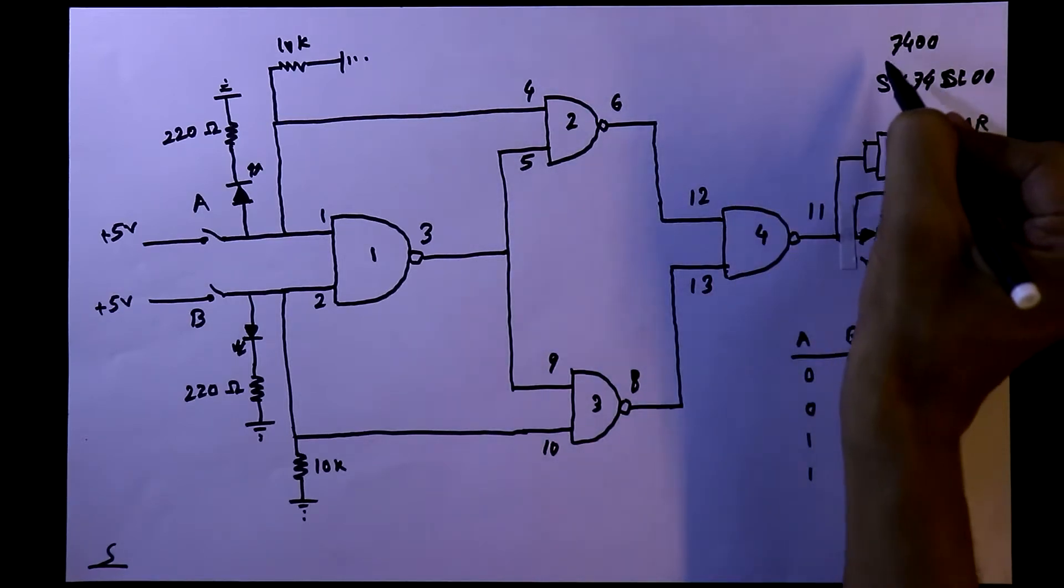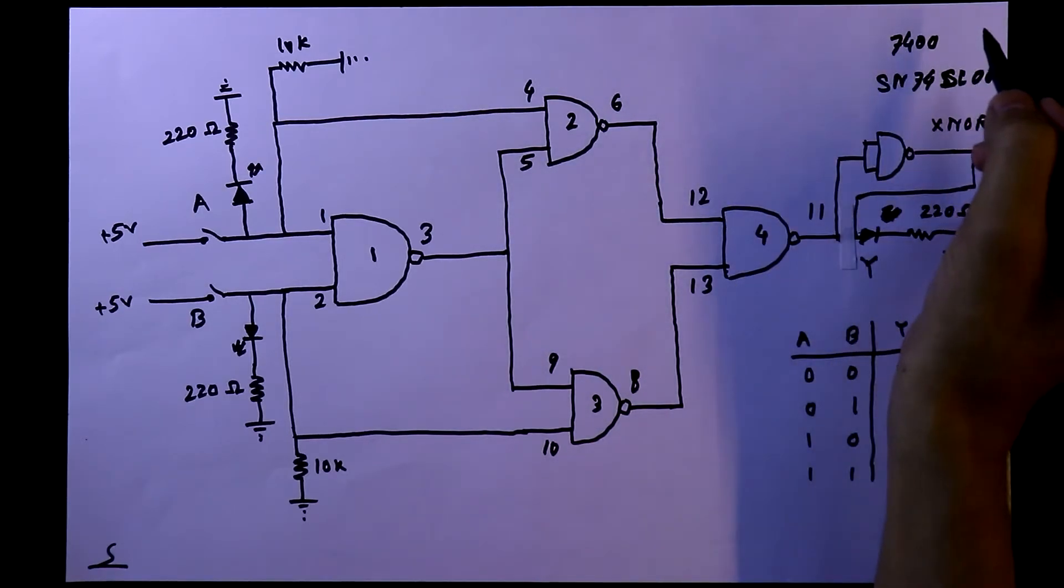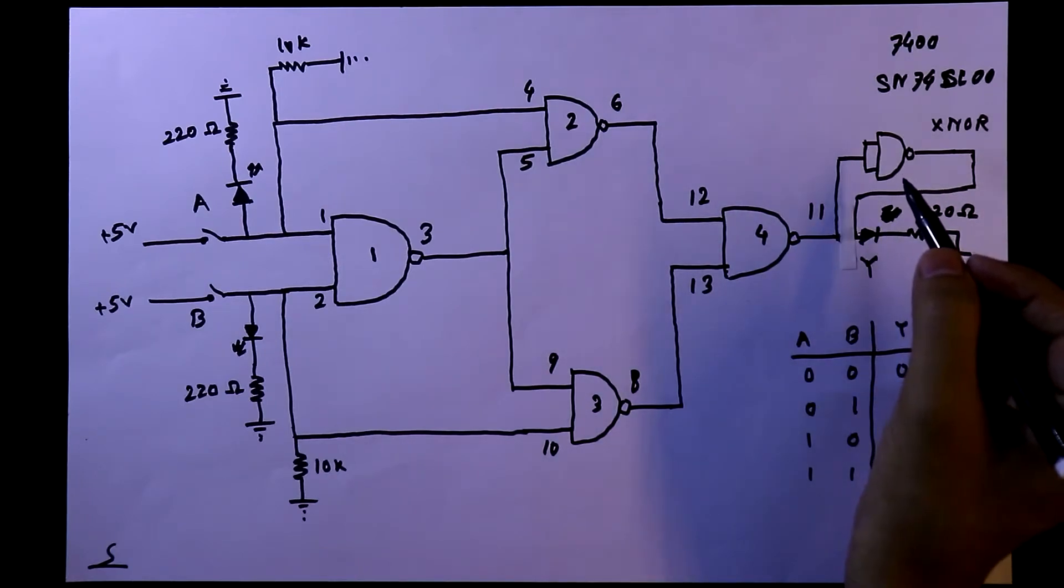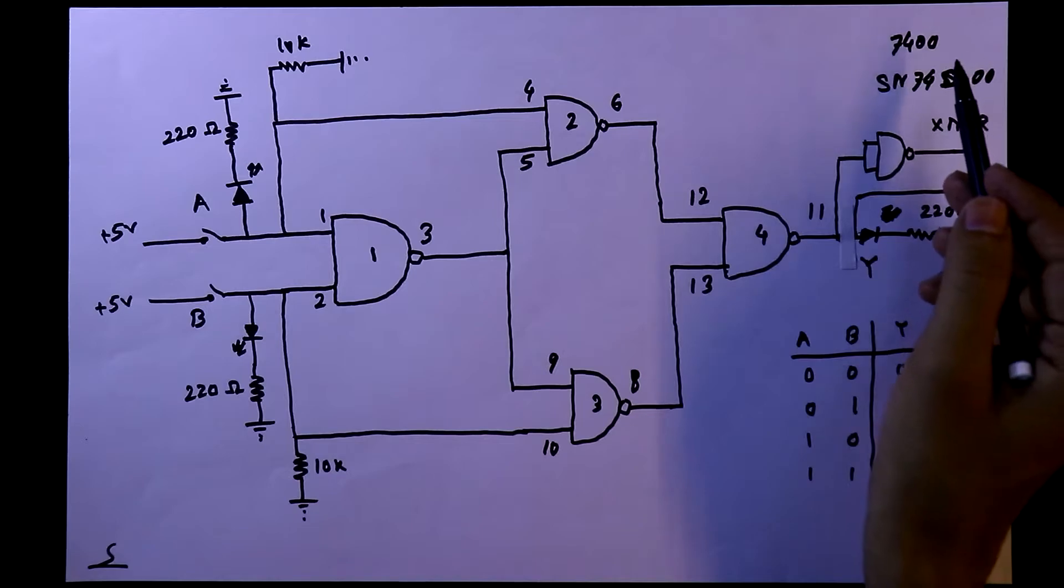Now as we know IC 7400 has 4 NAND gates but here we need 5 NAND gates so we'll use 2 pieces of 7400.